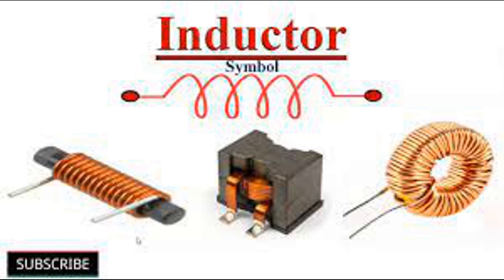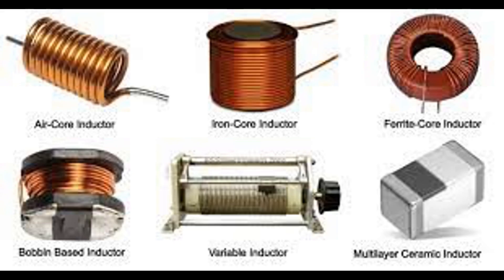A coil, also known as an inductor, is an essential passive electronic component used in a wide range of applications. It consists of a tightly wound wire or conductor, often around a core made of a magnetic material. When current flows through the coil, it generates a magnetic field, which makes coils particularly useful in various electronic devices and circuits. Let's explore the principles behind coils and some of their common applications.